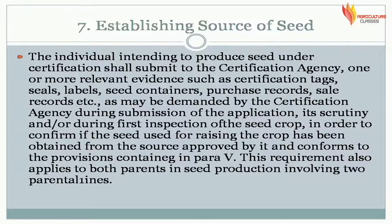Establishing source of seed. The individual intending to produce seed under certification shall submit to the certification agency one or more relevant evidence such as certification tags, seals, labels, seed containers, purchase records, sale records, etc., as may be demanded by the certification agency during submission of the application, its scrutiny, and/or during first inspection of the seed crop, in order to confirm if the seed used for raising the crop has been obtained from the approved source and conforms to the provisions contained in para V. This requirement also applies to both parents in seed production involving two parental lines.